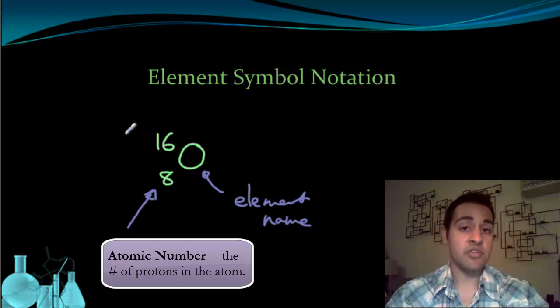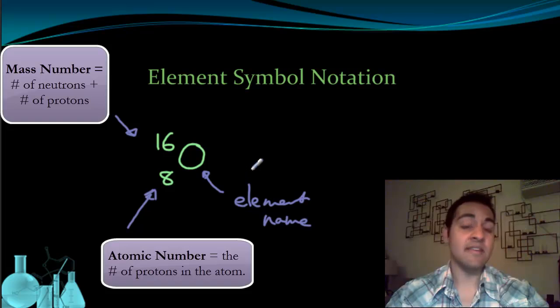The next piece of information is this 16. So the 16 is something called the mass number. Now the mass number, as the name might indicate to you, tells you the mass of the atom. Now we know from our chart before that most of the mass in the atom comes from protons and neutrons. So the mass number actually tells you the combined number of protons and neutrons in an atom. So if you know the mass number and you know the atomic number, you can figure out the number of protons and neutrons in this particular atom.